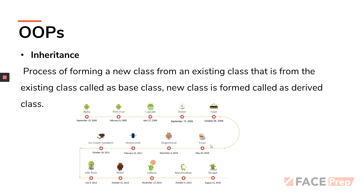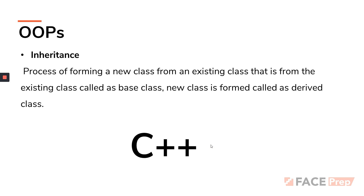One last example is C++ itself. As I've told you in previous videos, all the functions, functionalities, and packages present in C can also be used in C++. That is basically because C++ has inherited things from C. They have implemented all the things from C into C++. This is again an example of inheritance.